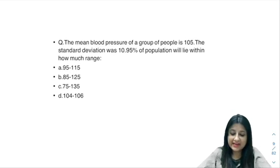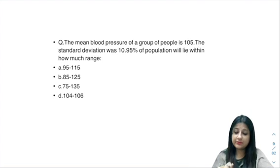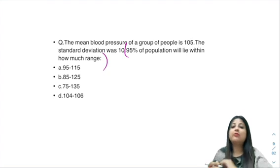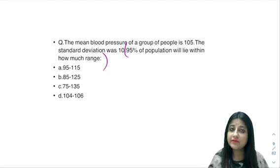Welcome to another PYQ for INICT. Very important: the mean blood pressure of a group of people is 105, standard deviation was 10. 95% of population will lie within how much range? INICT is famous for giving biostatistics questions.